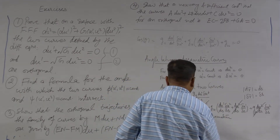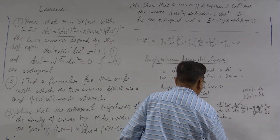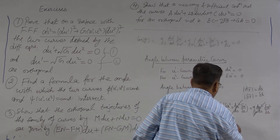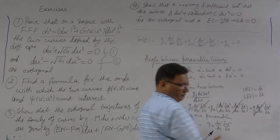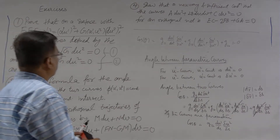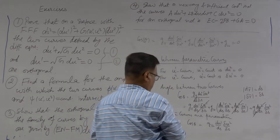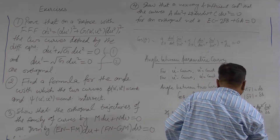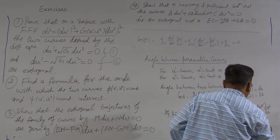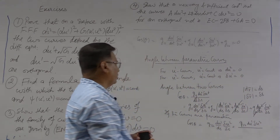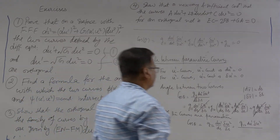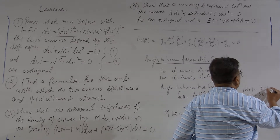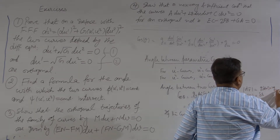So cos θ in this case will be equal to g₁₂ du¹/ds · δu²/δs. Let me further simplify it. I will write this as g₁₂ du¹ δu² upon mod dr. What was mod dr? If you recall, it was equal to g₁₁ du¹² plus 2g₁₂ du¹ du² plus g₂₂ du²², all under a square root.